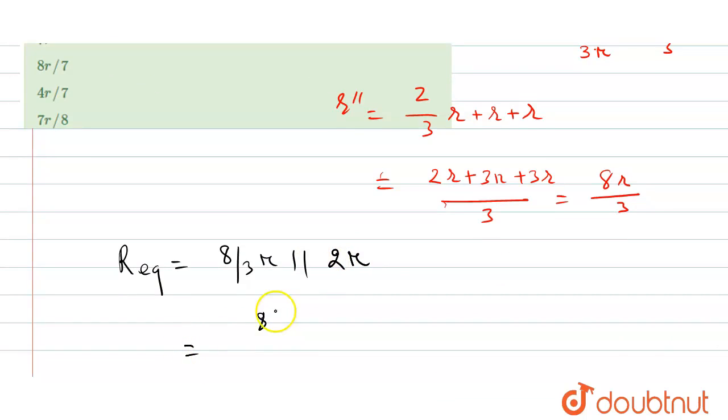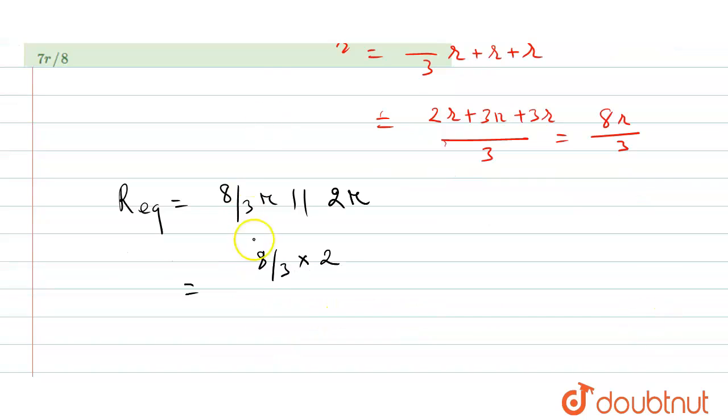So our final equivalent resistance will be 8 by 3R, this is parallel with twice R, so it will be 8 by 3 multiplied by 2R, divided by, this is R square, since both have R, divided by 8 by 3R, plus twice R.